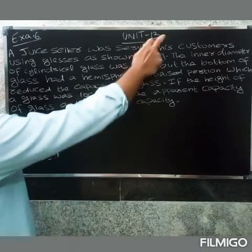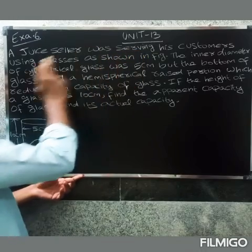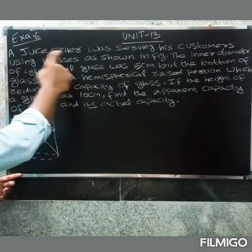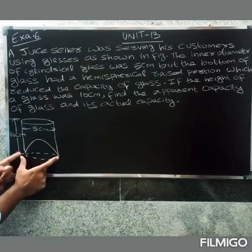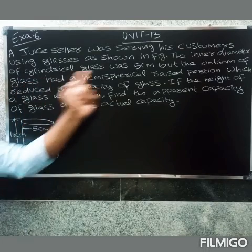Welcome friends, Unit 13 Example 6. A juice seller was serving his customers using glasses as shown in the figure. Now a juice seller is serving customers with a glass. The inner diameter of the cylindrical glass was 5 centimeters.